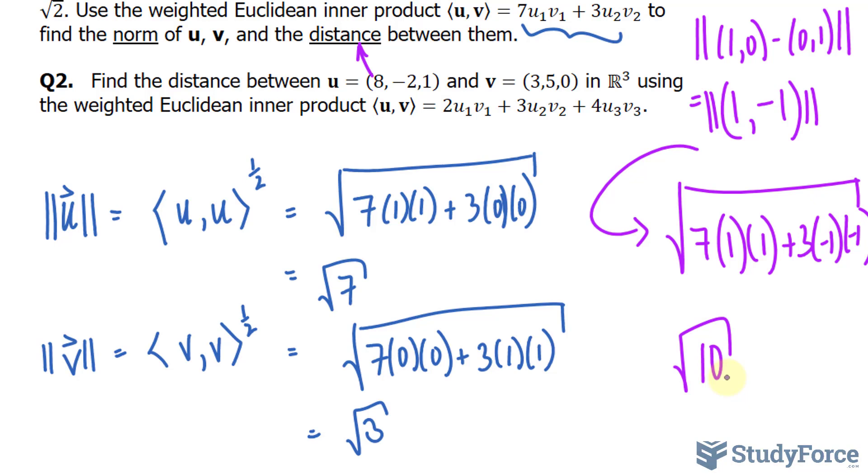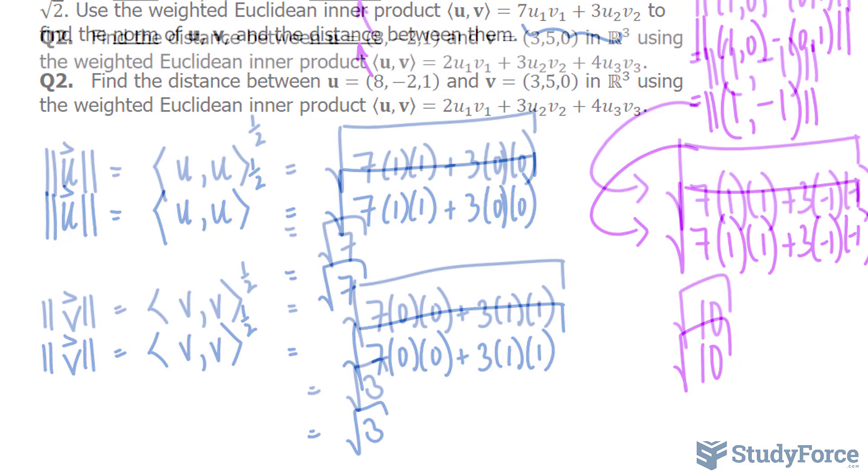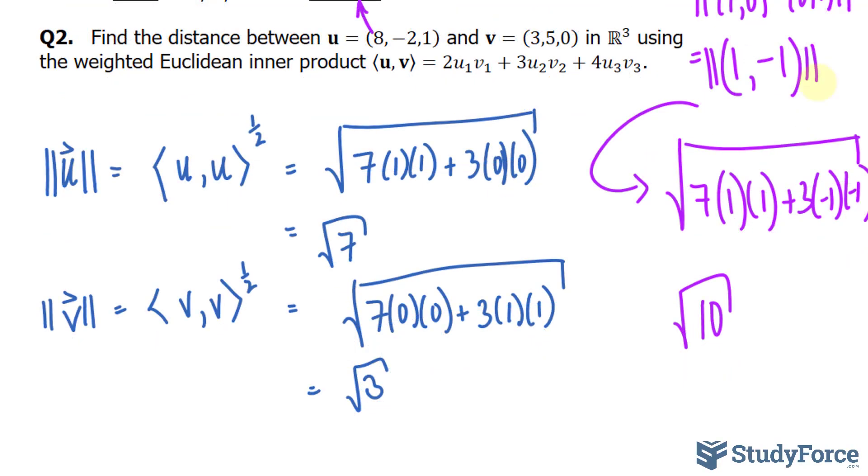Let's move on to question 2. Find the distance between u and v. Notice that this is in 3D space. We have three components. Using the Euclidean inner product shown here. So, we have to repeat the part on the distance. Let me write this down. Let's make up a brand new vector where we subtract the components of each. 8 minus 3 is 5, negative 2 minus 5 is negative 7, and 1 minus 0 is 1.